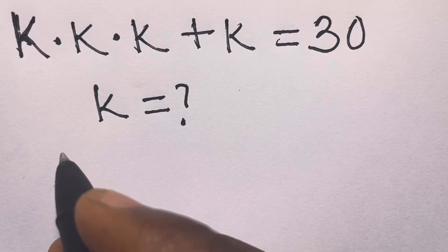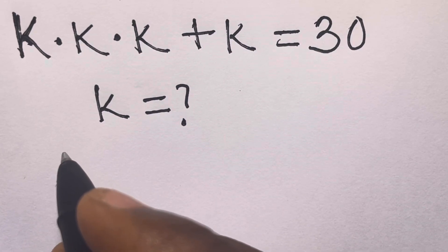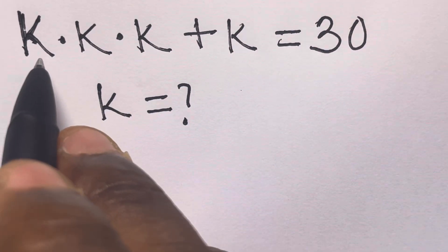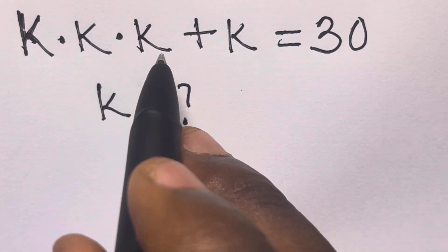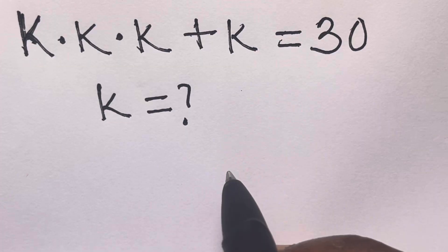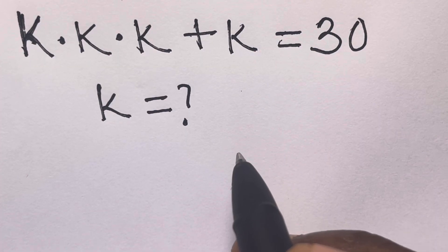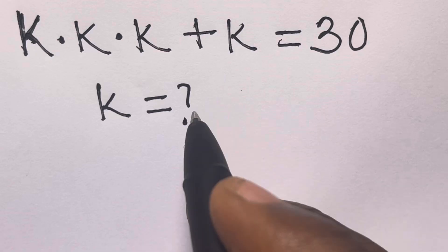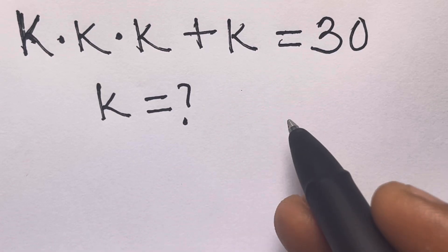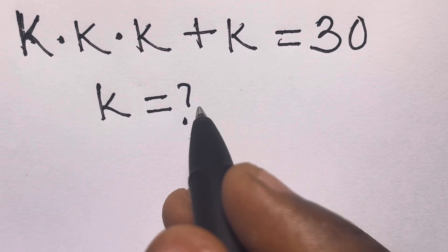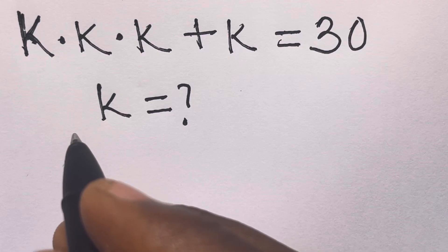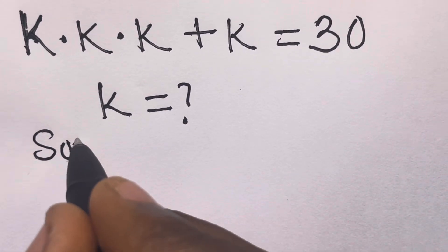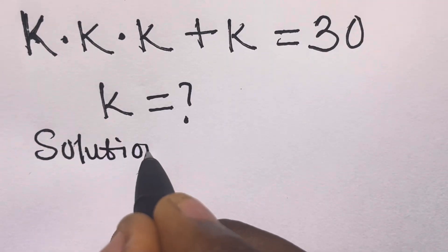Hi guys, welcome to mathematics. In this video we want to solve for k: k times k times k plus k equals 30. This looks simple, but wait — can you even solve it before I do? You can actually try and leave your answer in the comment section. Let's work it together.